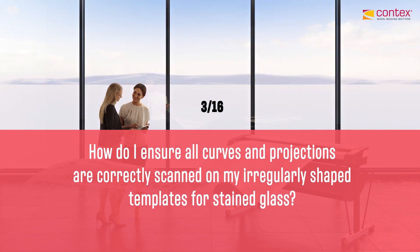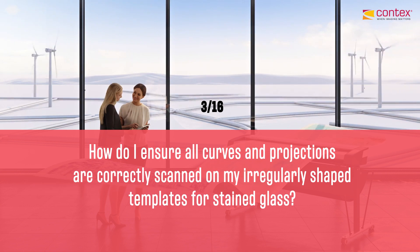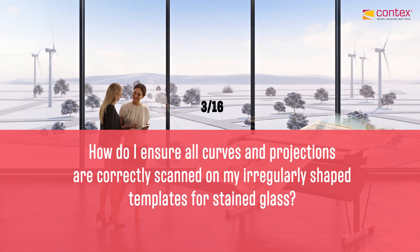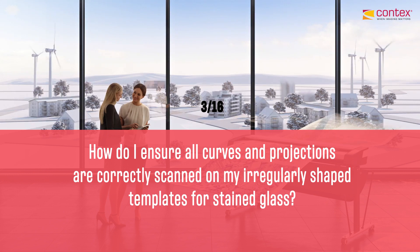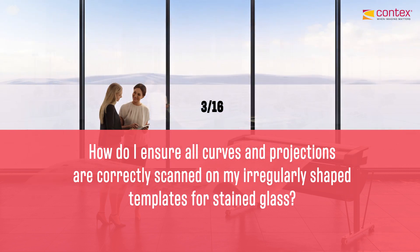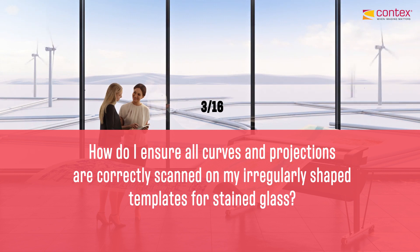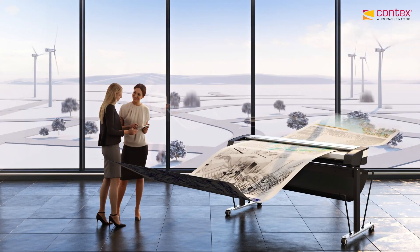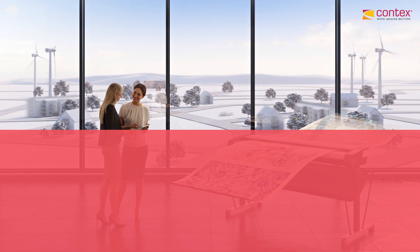For example, if there's a large curve, you need to make sure the very deepest portion of that curve is triggering the paper sensor first, so that you capture all the data. Otherwise it might catch the curve two inches back and cut the document off. If the shape is so irregular that you can't deal with it at all, you probably need to put it in a carrier sheet — a clear acetate film — so the paper sensor will trigger for the entire document regardless of the pattern.